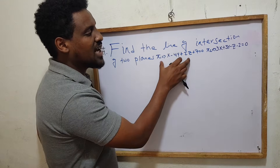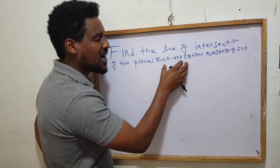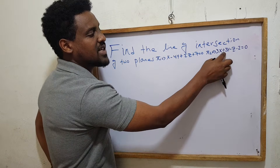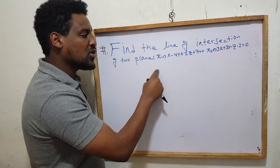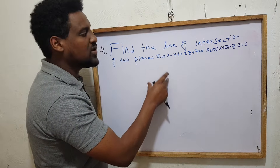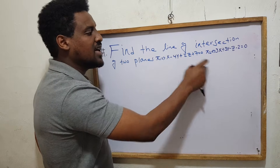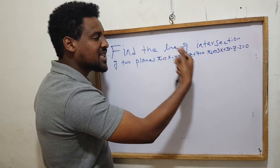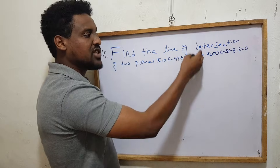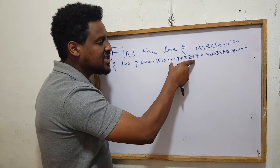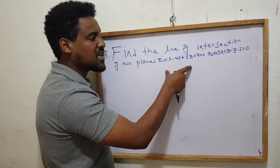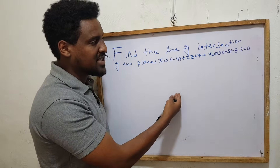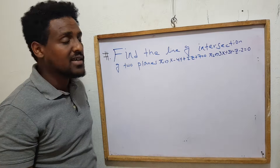The parallel vector to the line is found from the normals: 1 minus 4, 3 minus 1. This is the cross product of two vectors perpendicular to the line. If the line is perpendicular to the line of intersection, it is parallel. So if the cross product equals the normal vector, it is parallel.